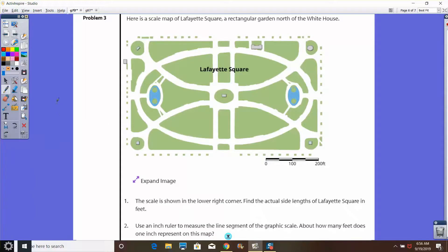Number three, we have a map of Lafayette Square, which is a garden north of the White House. Our job here is to use the scale to find the actual side lengths of Lafayette Square in feet. At the bottom here you see a scale. All the way from here to here is 200 feet. We can use half of it, 100 feet. We can even use a quarter of the whole thing and say that's 50 feet.